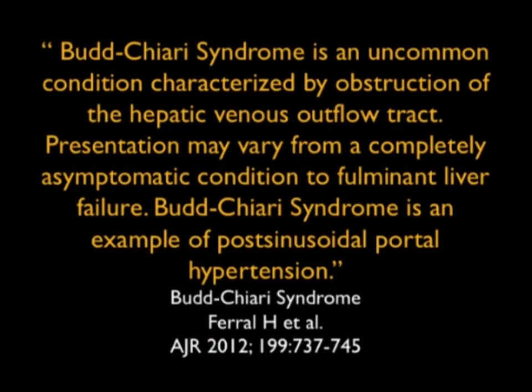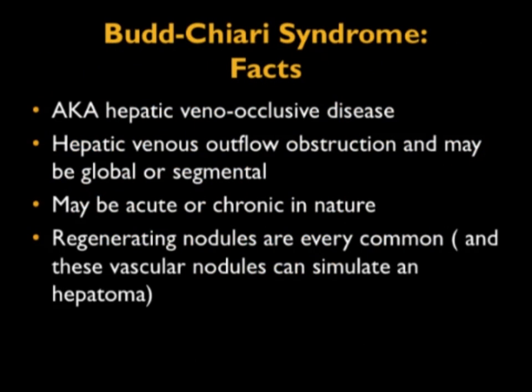Another thing in the liver armamentarium is Budd-Chiari syndrome. It's an uncommon condition characterized by obstruction of the hepatic venous outflow tract. Presentation may vary from a completely asymptomatic condition to full-out liver failure. Budd-Chiari is an example of post-sinusoidal portal hypertension, also known as hepatic veno-occlusive disease. Hepatic venous outflow obstruction may be global or segmental, and may be acute or chronic. Regenerating nodules are very, very common in these patients, so it's very important to look at them.